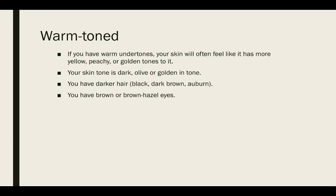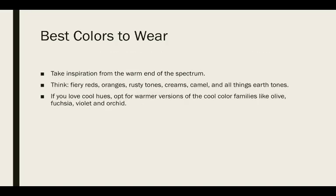If you are warm-toned, then your skin is going to feel like it has more of a yellow or a peachy or golden tone to it. Your skin tone is typically dark, olive, or golden. And you typically will have dark hair like black, dark brown, auburn. You'll usually have brown or brown-hazel eyes as well. The best colors to wear is to take your inspiration from the warm end of the spectrum. You're going to think oranges, rusty tones, a camel, all think earthy. If you love cool hues, then you're going to want to go for the warmer version, so like olive or violet or orchid.